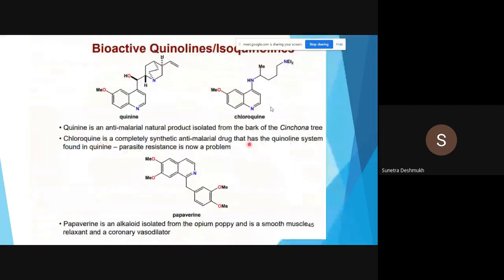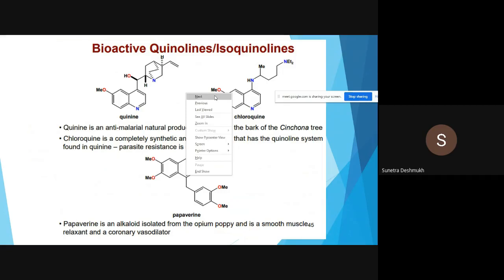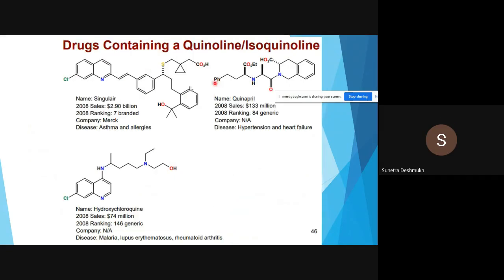Summary: these are some bioactive, pharmaceutically important molecules. Quinine is an antimalarial natural product isolated from the bark of cinchona tree. Chloroquine is a completely synthetic antimalarial drug that has a quinoline system found in quinine. Parasite resistance is now a problem. Papaverine contains isoquinoline.